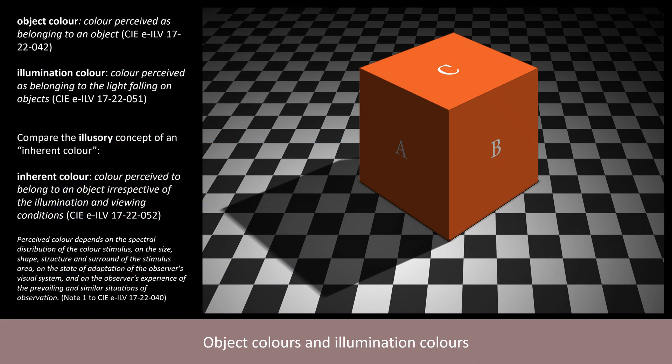Unsurprisingly, colours perceived as belonging to objects are called object colours, and colours perceived as belonging to illumination are called illumination colours. But note that object colours are defined simply as perceptions.